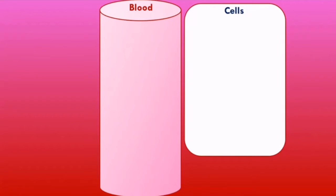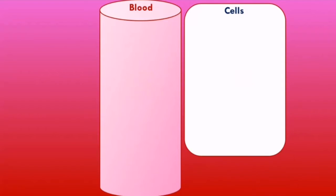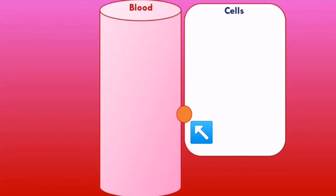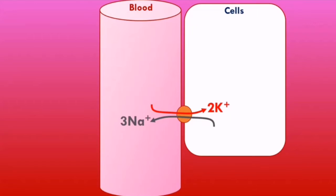One of the most important structures that maintains the intracellular and serum potassium levels is the sodium-potassium ATPase pump. This pump pulls two potassium ions from the blood into the cells and pushes three sodium ions out of the cells into the blood.